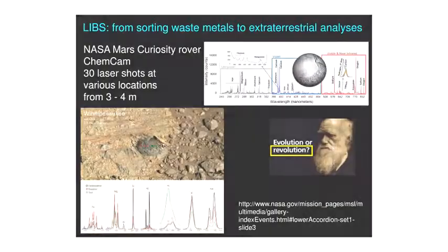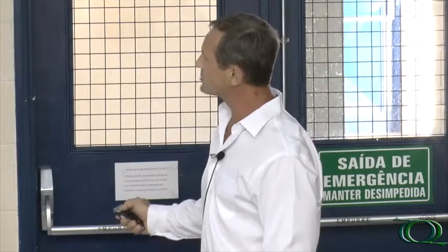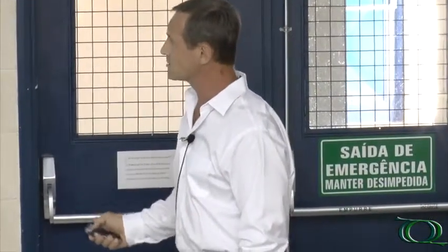Remote detection in the extreme can be achieved. This is an example of a laser ablation unit mounted on the Mars Curiosity rover at the end of their ChemCam. Here we have standoff detection of about three to four meters where this device ablated some sample from what looked like an inclusion in Martian soil, and the information was sent back to Earth. It was fitted with a detector with sensitivity in the range of 240 to 800 nanometers — truly standoff detection all the way from Mars. This is revolutionary in principle.